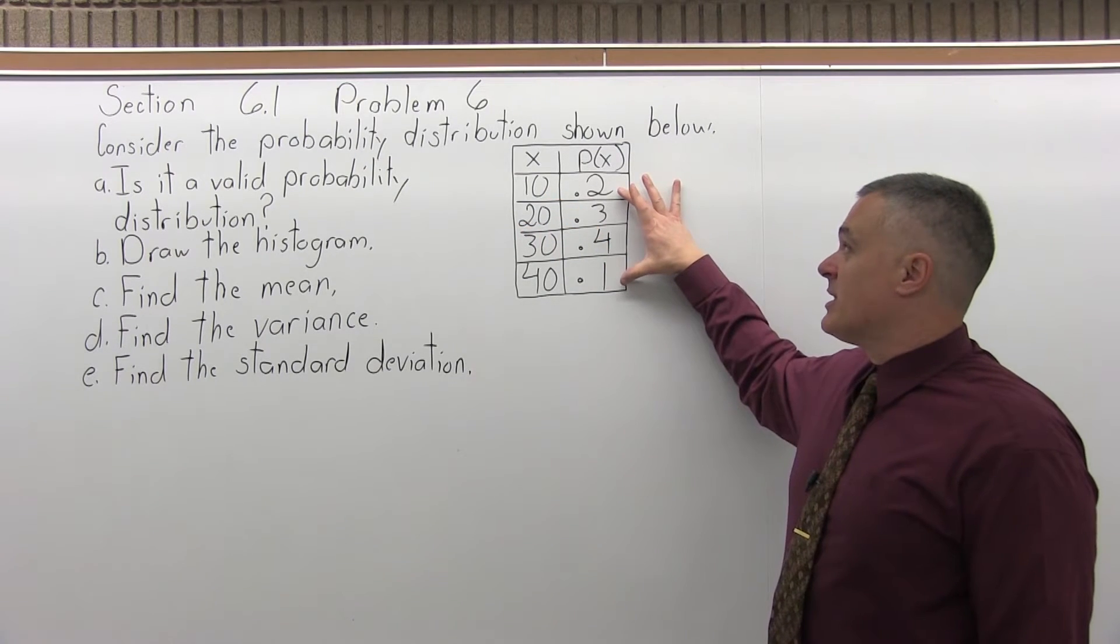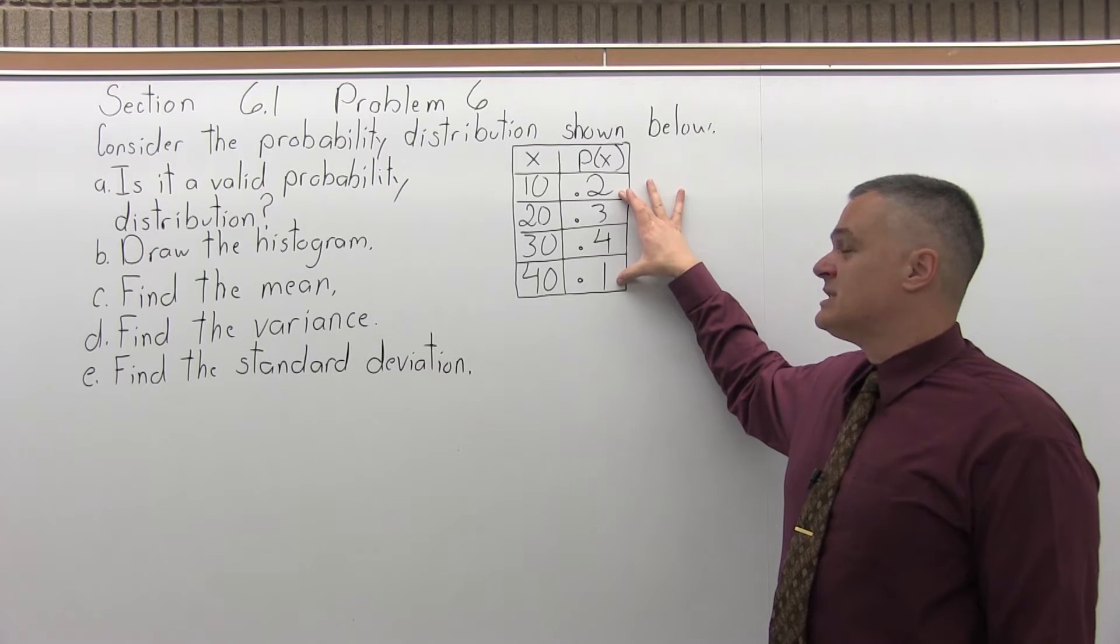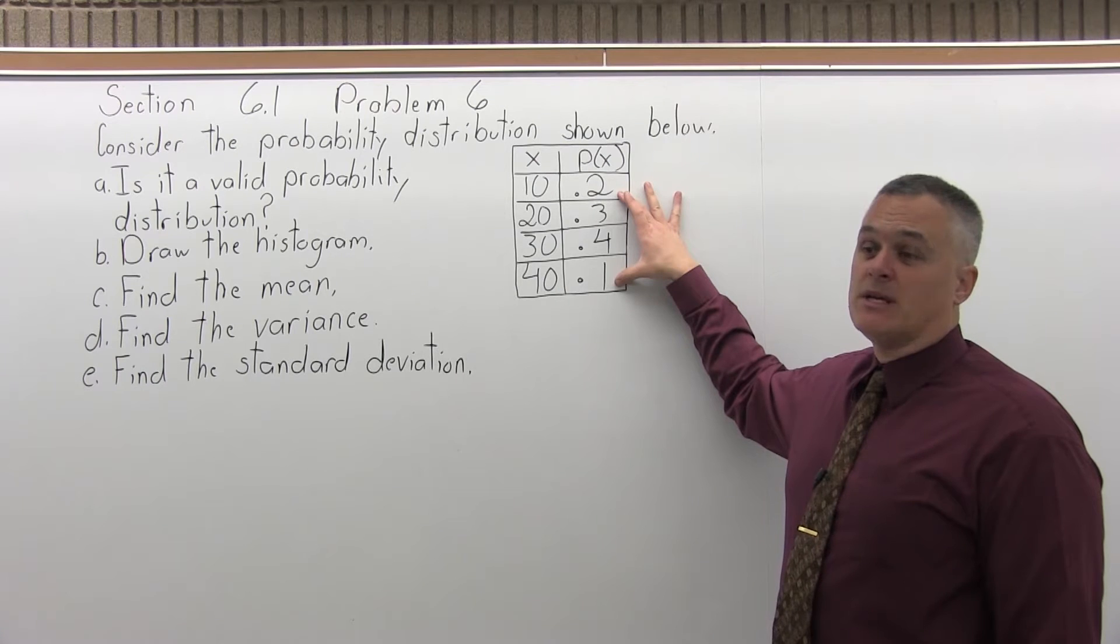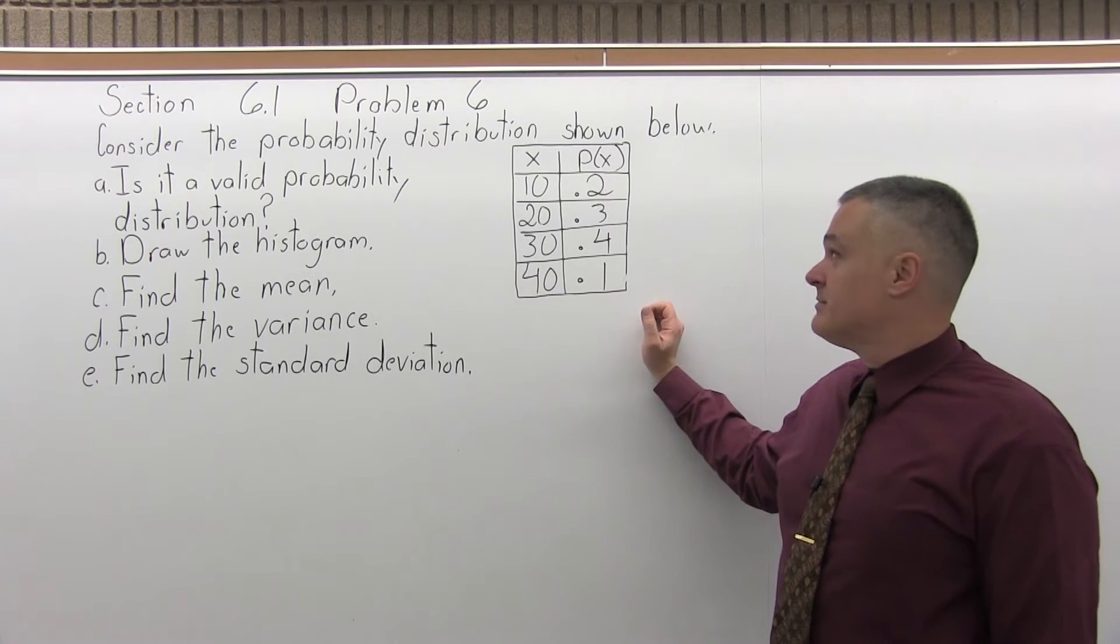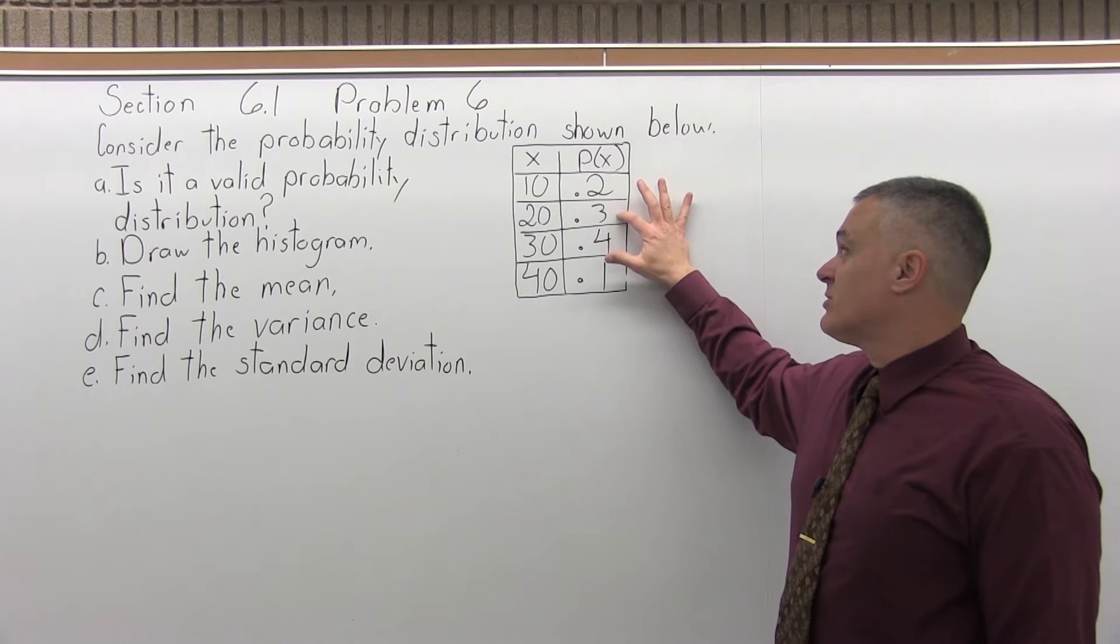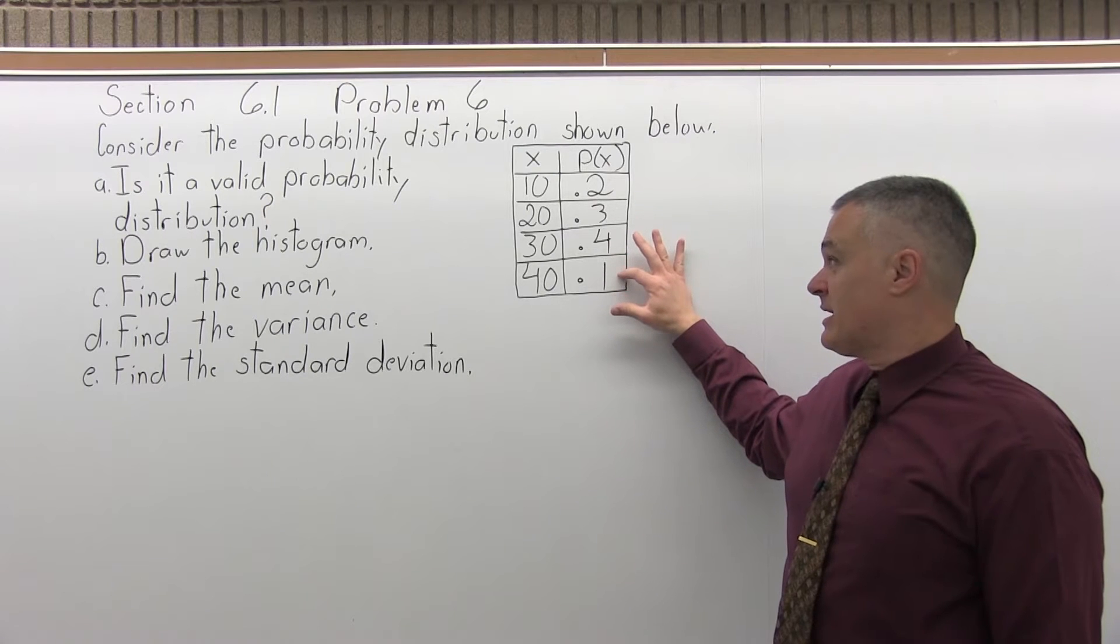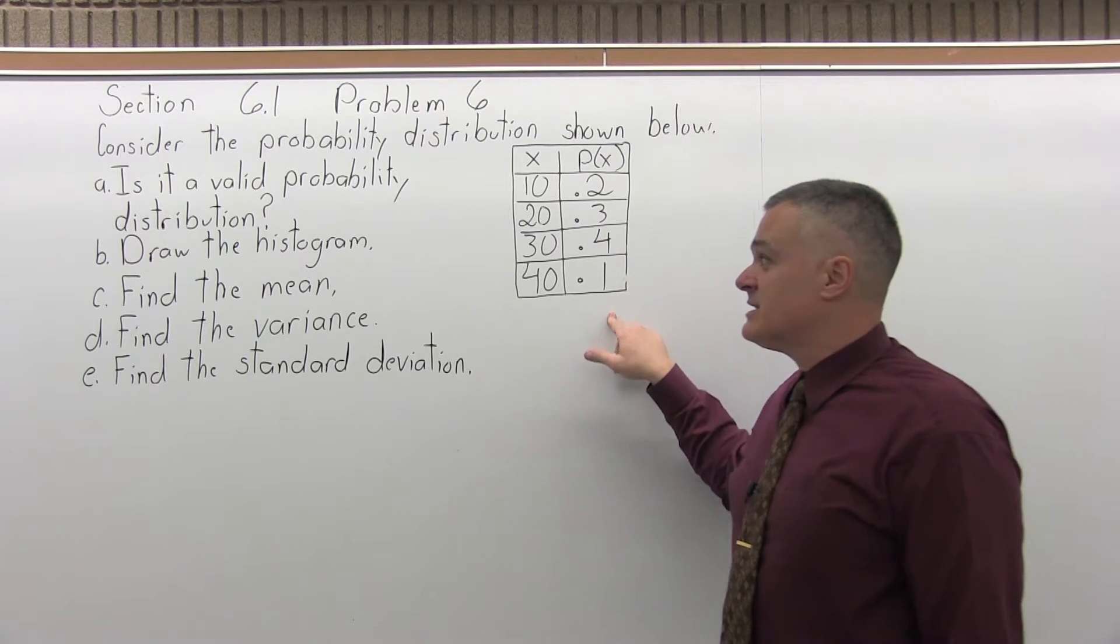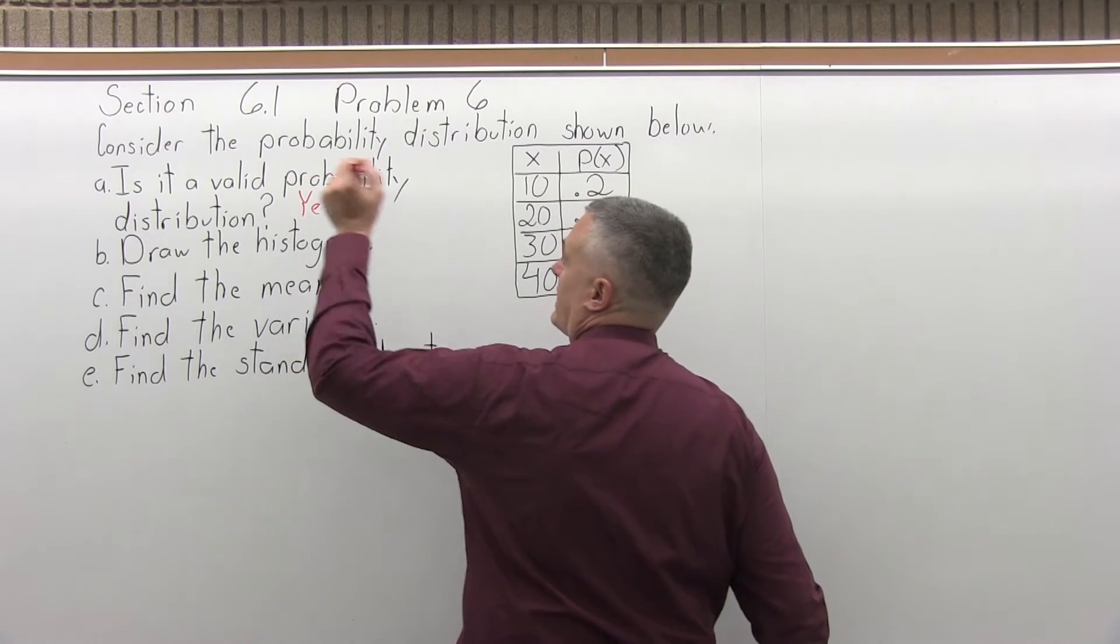The second requirement is every value in the second column is a number that's between zero and one. That's okay too. And the third requirement is that the total of this second column adds up to one. So 0.2 plus 0.3 is 0.5, 0.5 plus 0.4 is 0.9, and then 0.9 plus 0.1 is 1.0, which is one. So the answer is yes, it is valid. All three of those requirements check out. So the answer to A, yes, this is valid.